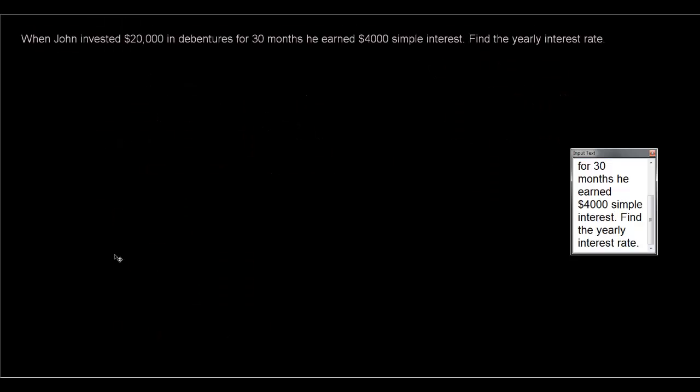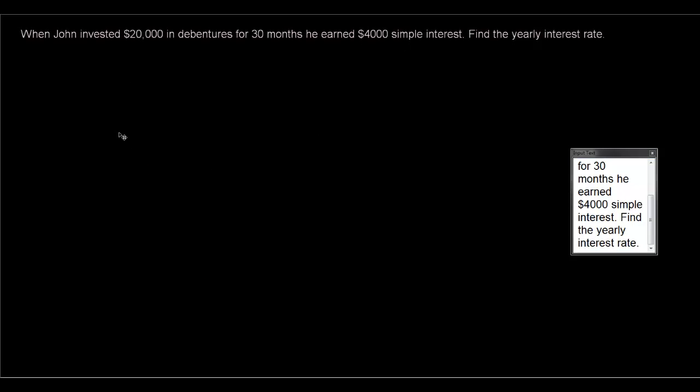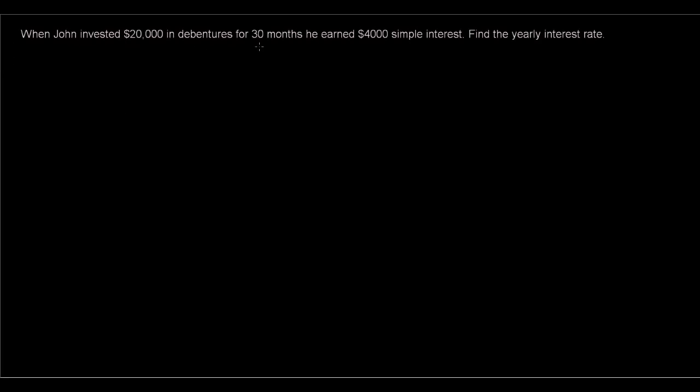Okay, let's have a look at this question here. When John invested $20,000 in debentures for 30 months, he earned $4,000 simple interest. Find the yearly interest rate.